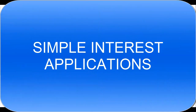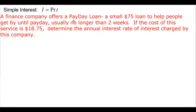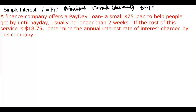This video will talk about simple interest applications. Simple interest is probably the simplest formula we can have. I is equal to P times R times T, where I is the interest, P is the principal, R is your rate — and you have to be sure that you write your rate as a decimal — and T is time, which is usually in years.